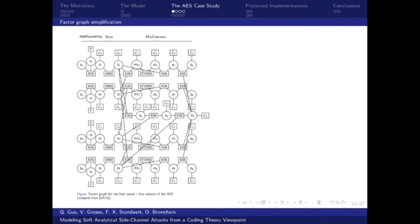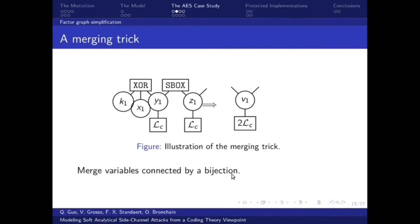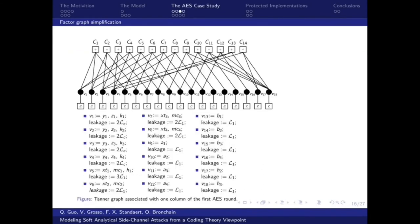Now we start the AES case study. This is a factor graph of the first round, first column of AES. It's very complicated. We can do some merging trick to simplify the graph. We merge variables connected by a bijection. We see that Y1 is the XOR of K1 and X1. But as we know the plaintext X1, Y1 and K1 is connected by a bijection. And also Y1 is connected with Z1 with a bijection. So we can put K1, Y1, Z1 as a new variable and connect the leakages to this new variable. By the merging trick, we hide the long-linear operation, and the remaining is only the XOR operation.